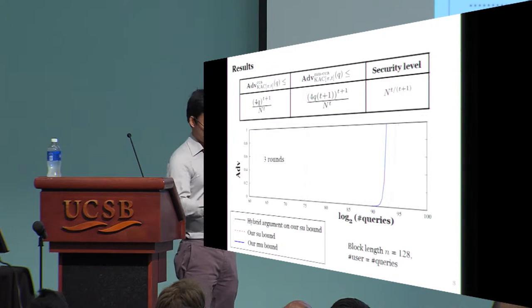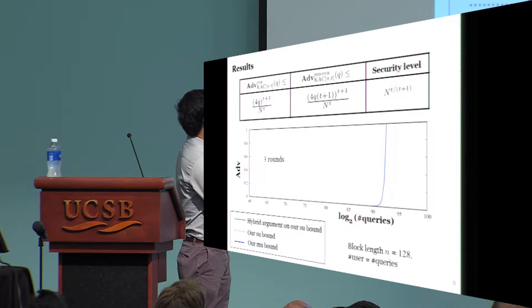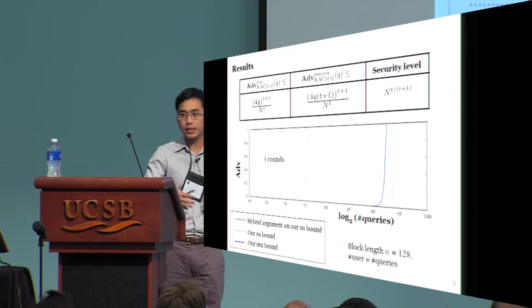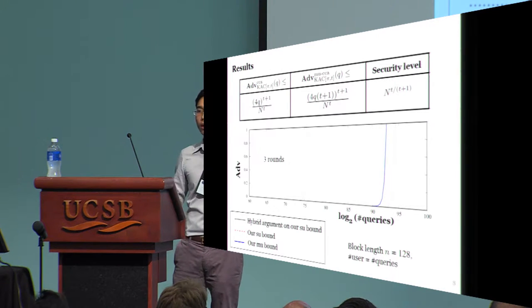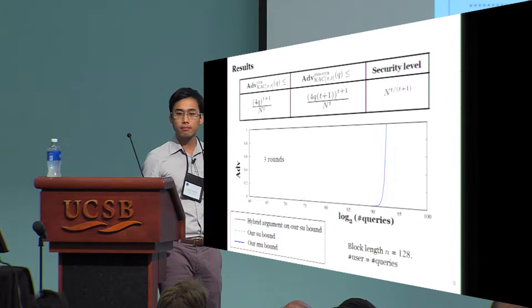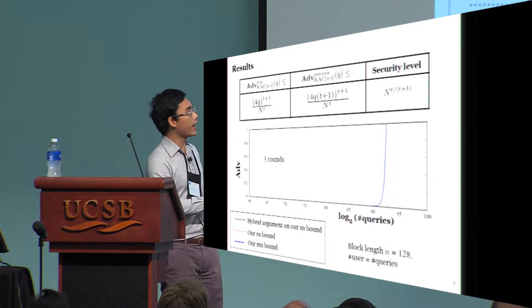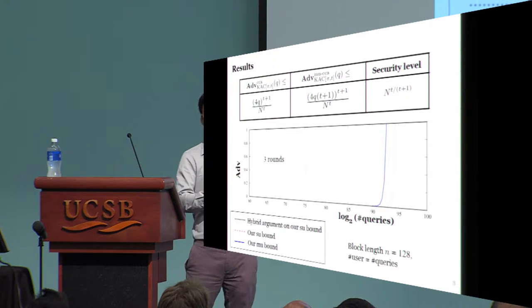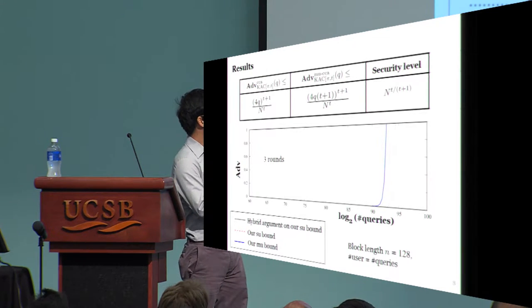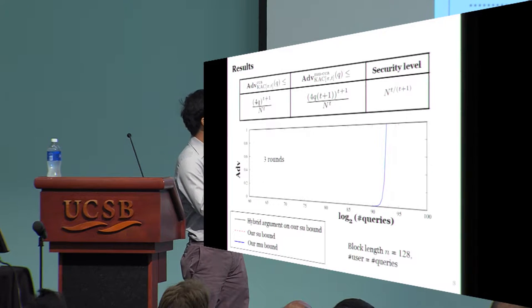Specifically, here are the bounds for KAC. In the single-user case, we essentially achieve the bounds corresponding to the best known attacks. In the multi-user case, as expected, there's some small loss, but our results do much better than what is achieved by a hybrid argument, as visualized here.